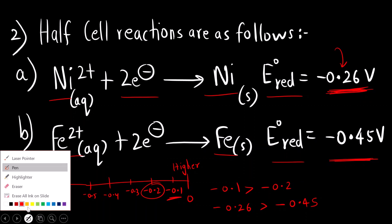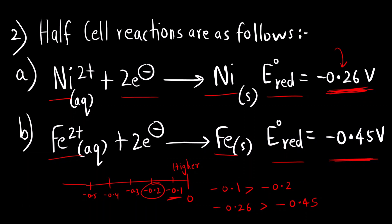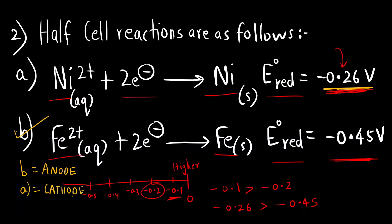So which electrode will act as the anode? The lower value. Electrode B will undergo oxidation — it will act as the anode. And the higher value, that is minus 0.26, Electrode A will act as a cathode and undergo reduction. So the first reaction — nickel will act as a cathode and iron will act as the anode.